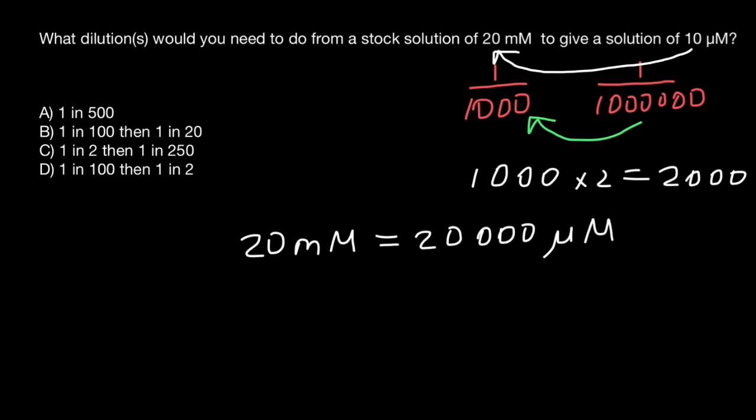20,000 μM is our initial stock solution and we need to get 10 μM. So we just divide this number by 10 and we get a 2,000-fold dilution.